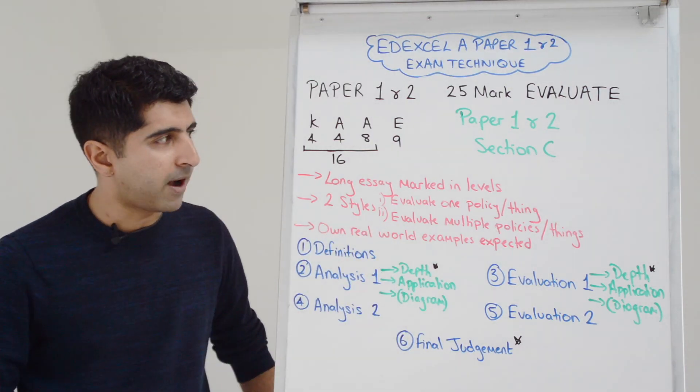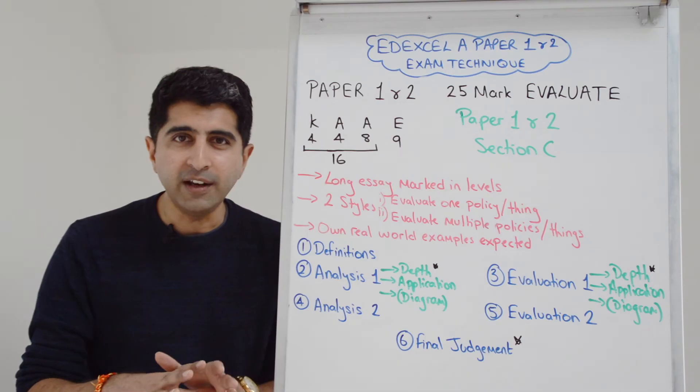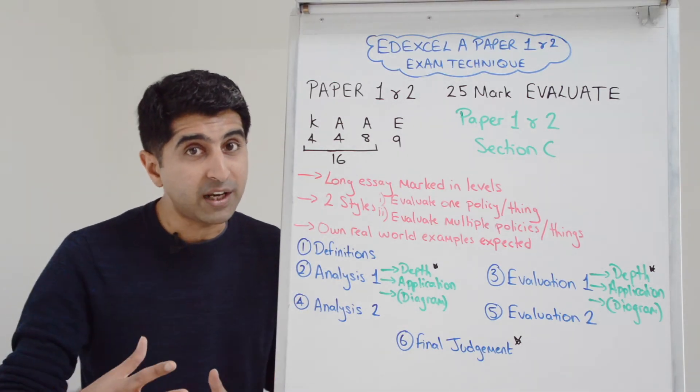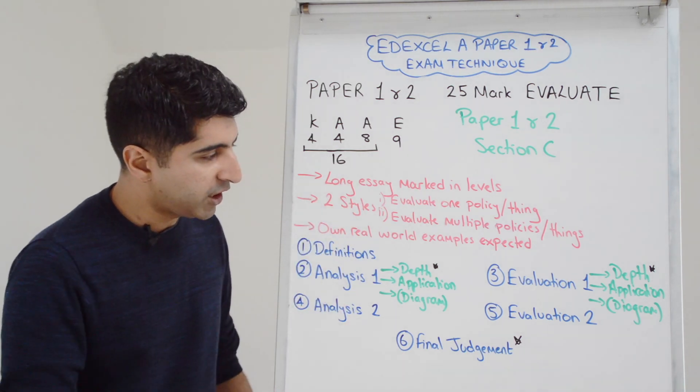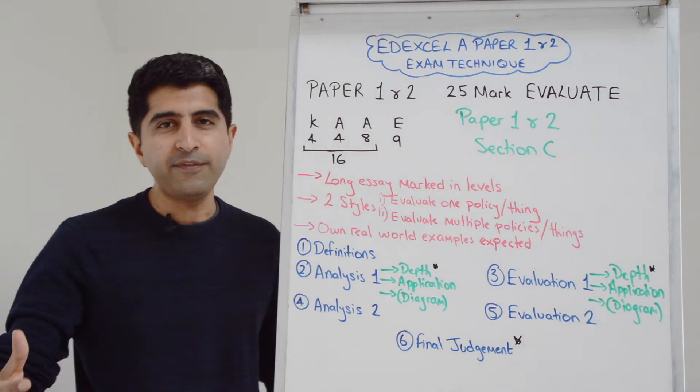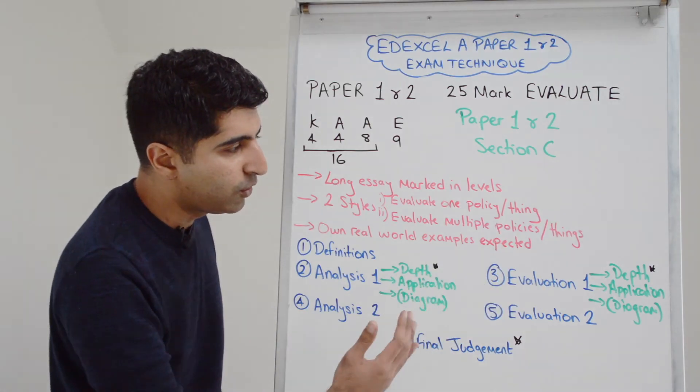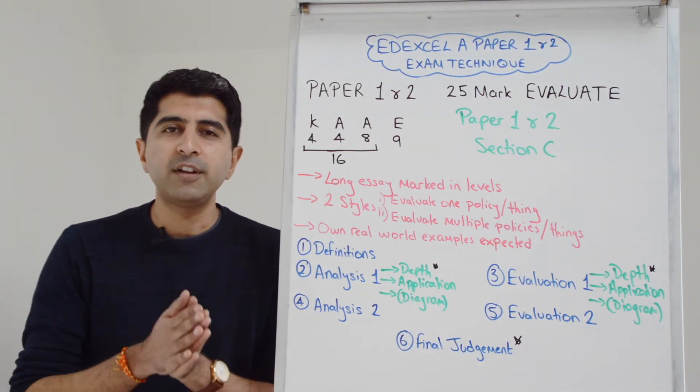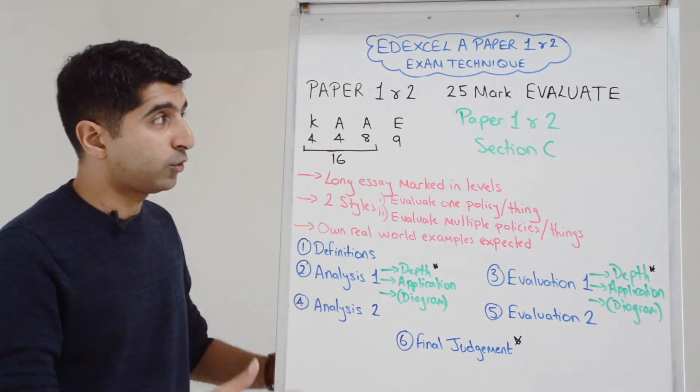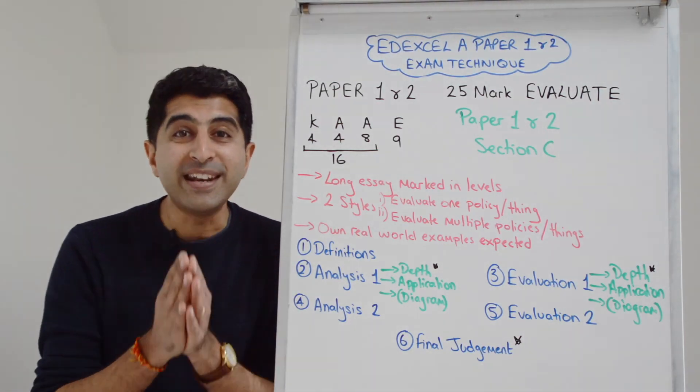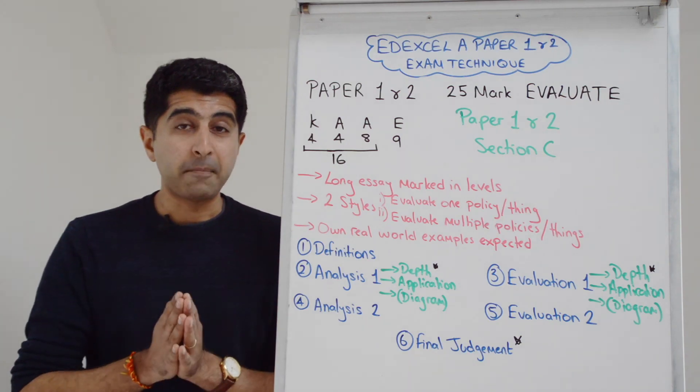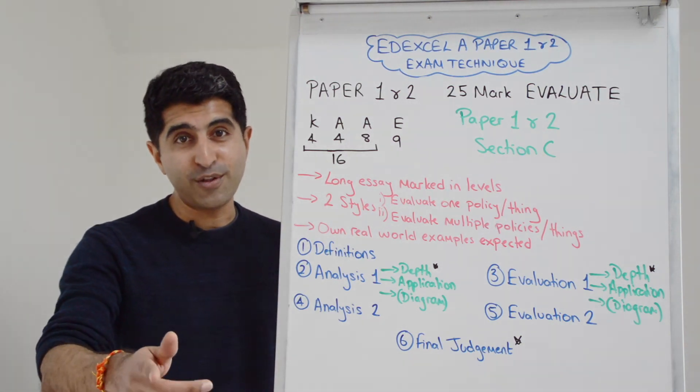That's the 25 marker. Hopefully you feel pretty confident after watching this video, but especially after watching the writing skills videos as well that go with this structure. Where there are black stars, that's where there are specific writing skills videos to guide you in more detail. That's a 25 marker, crucially just in paper one and paper two. Stay tuned for the next video where we're going to look at the 25 marker in paper three. Thanks for watching.